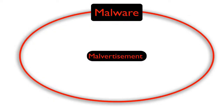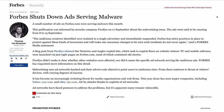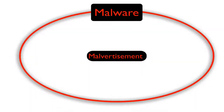Sites can also have their own advertisement networks — Forbes is an example that recently hosted malware. So malvertisement is a growing attack vector you need to be aware of. Then there are drive-by attacks, which is the name given to simply visiting a website that contains code to exploit your machine.